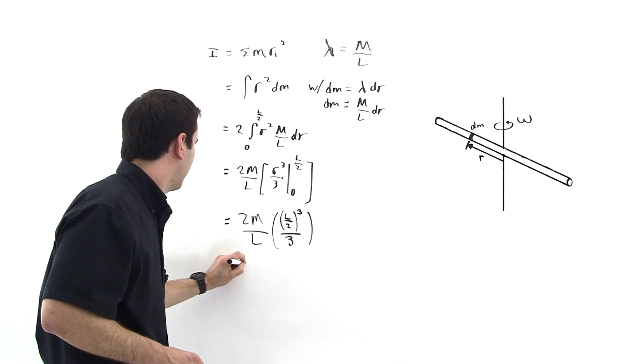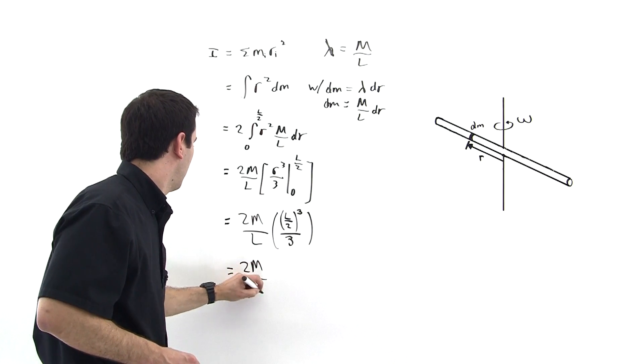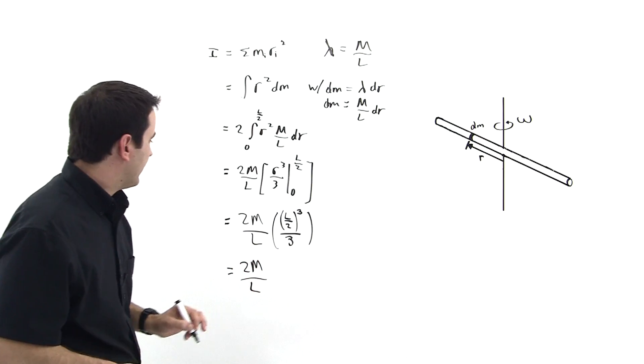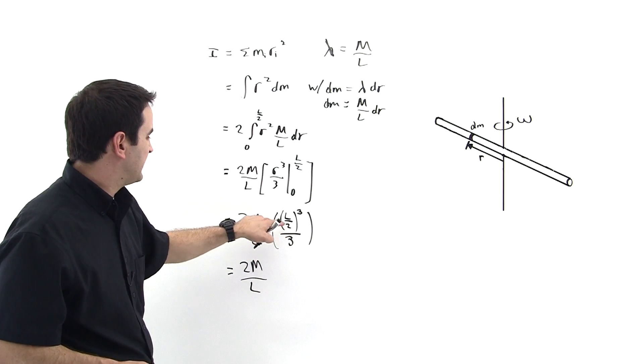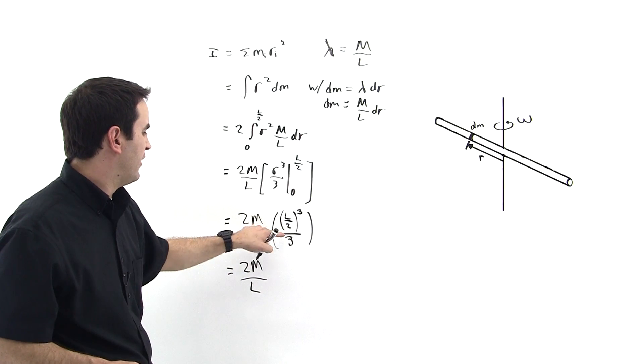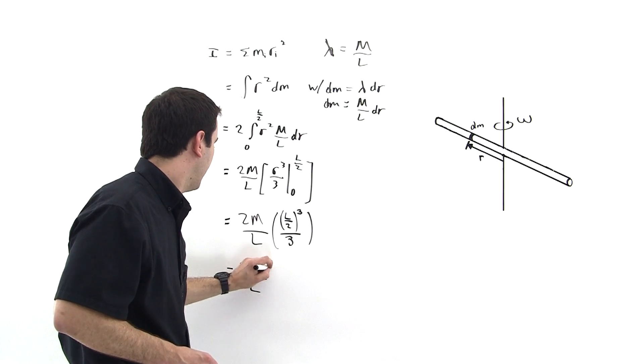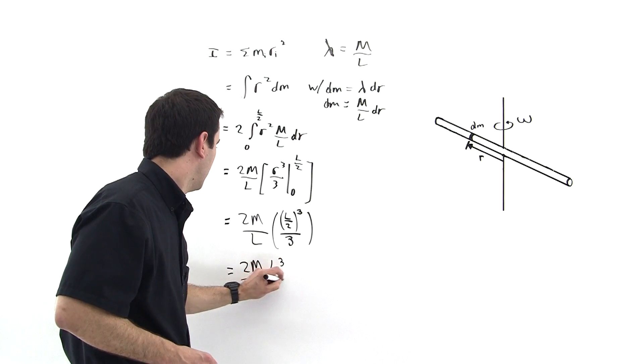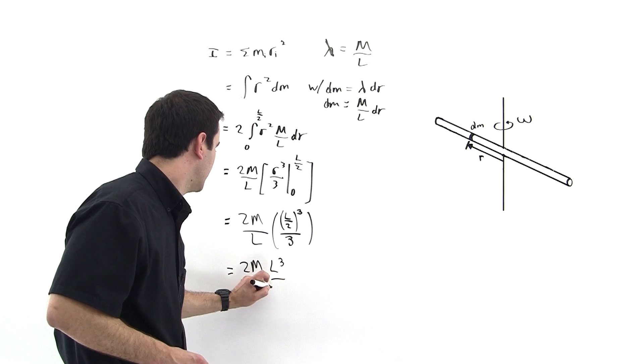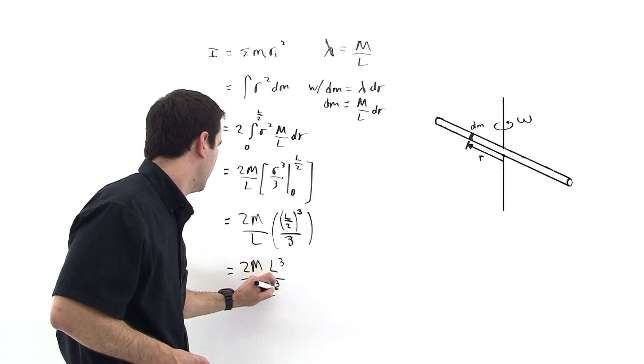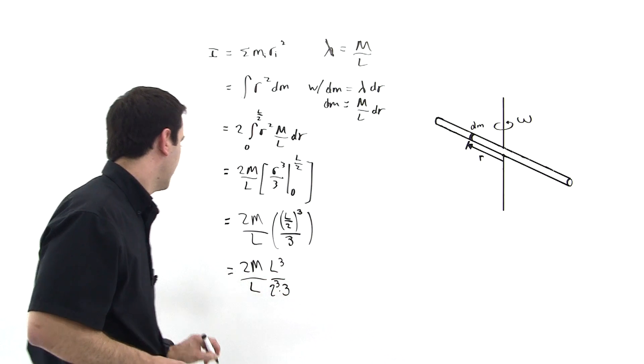Okay, so then this is 2m over l. And we have, let's do some, this is l cubed over 2 cubed and then invert and multiply this 3. So we'll have l cubed over 2 cubed, which is, and I'll just write it in, 2 cubed times 3. Like that.